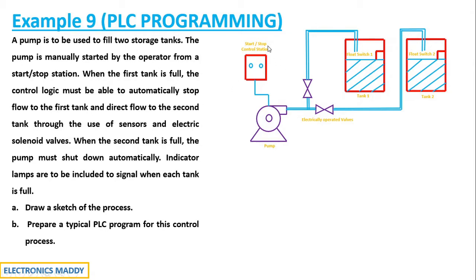The sketch shows a master control station with a start and stop push button used to control the pump. The pump has a motor that controls the flow of liquid within the system. We have two solenoid valves — valve number one and valve number two. There are also two sensor switches: float switch one and float switch two. And we have two tanks — tank one and tank two — which hold the liquid.